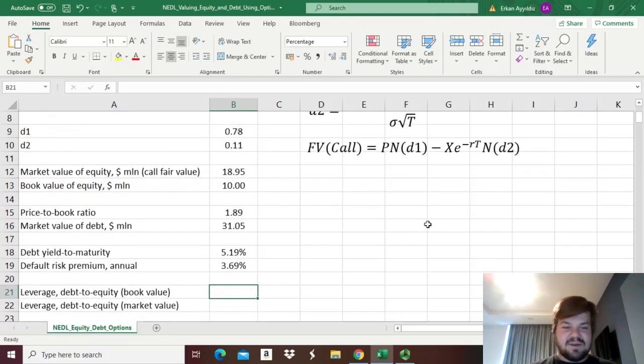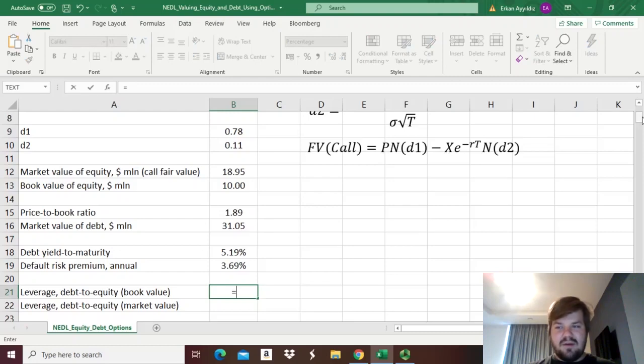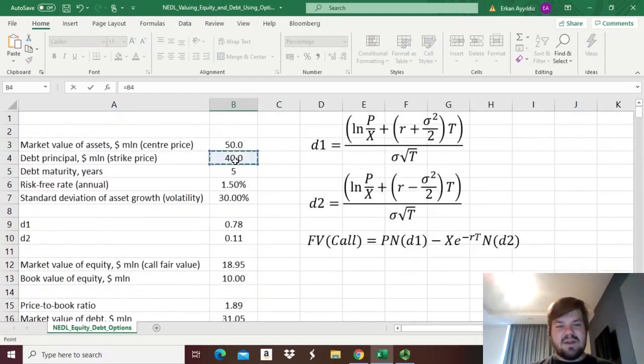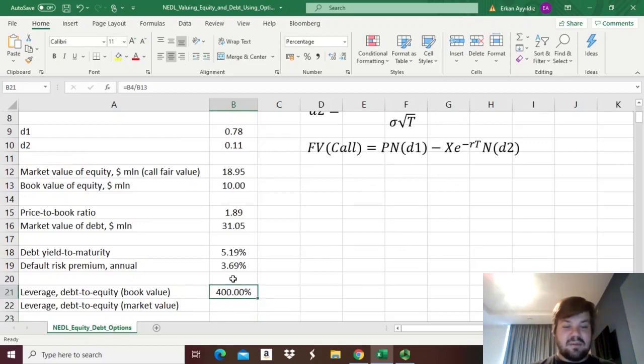And the final bit, that we can calculate in terms of multiples, is two different types of leverage. Leverage that is calculated using book values, and leverage that is calculated using market values. So, for the book value leverage, we just need to divide the debt principle by the book value of equity, and it's gonna be 400%, so 4, which is unsurprising as we have 4 times more debt in terms of book value than equity, and that was kinda intuitive at the start.